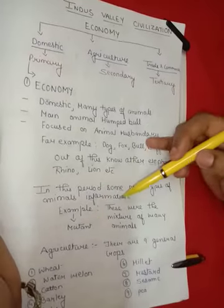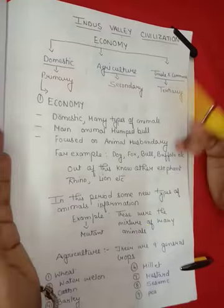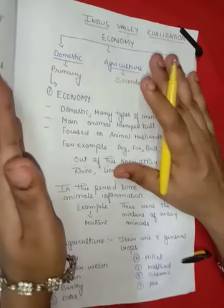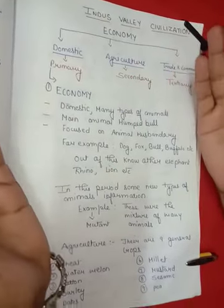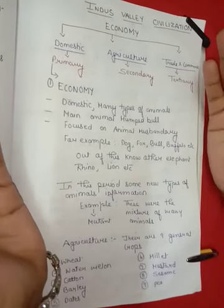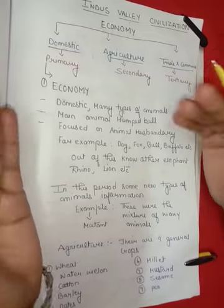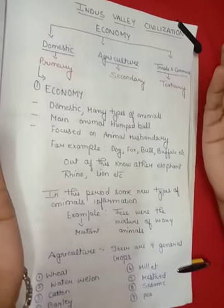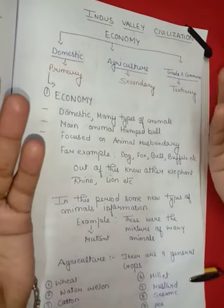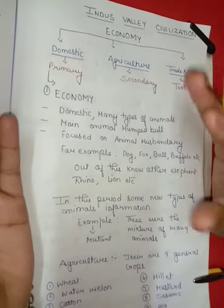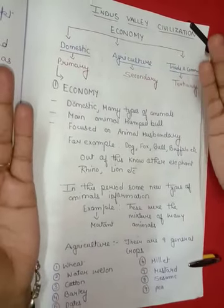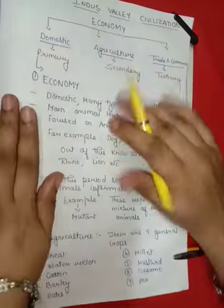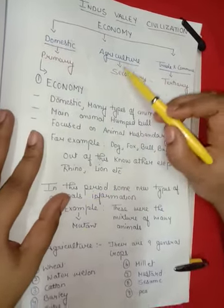In this period, some new types of animal information are found — for example, mutants, meaning mixtures of many animals. In this civilization, people practiced animal husbandry, and clear evidence has been found from all places. The humped bull was a holy animal. Some new types were mutants — mixtures of many animals.